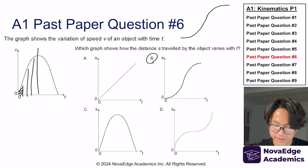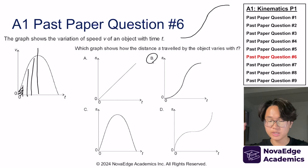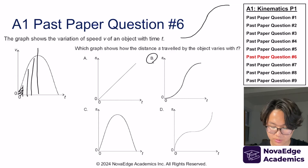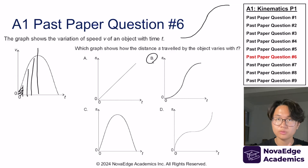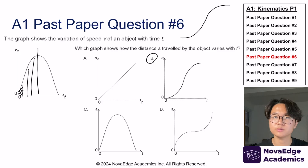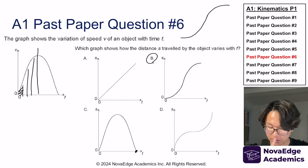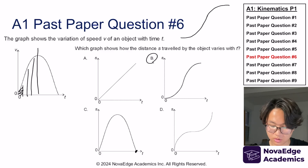Why doesn't it come all the way down? Because we're not going backwards. If we were going backwards, our displacement would reach zero, like option C. But we're not going backwards, so that's why it's not C.